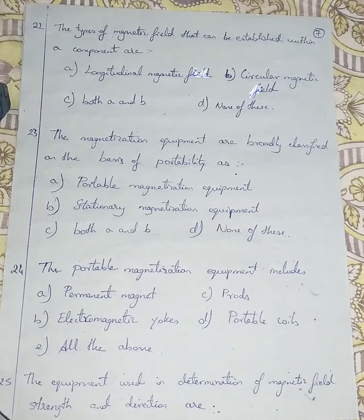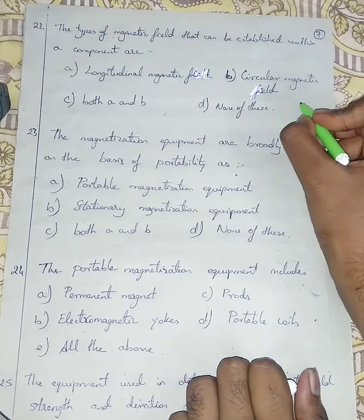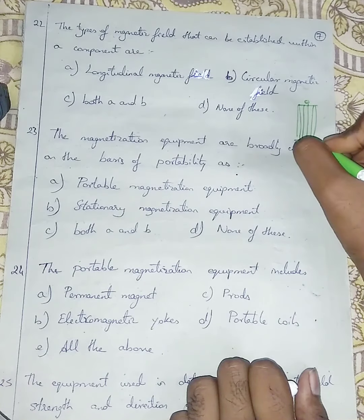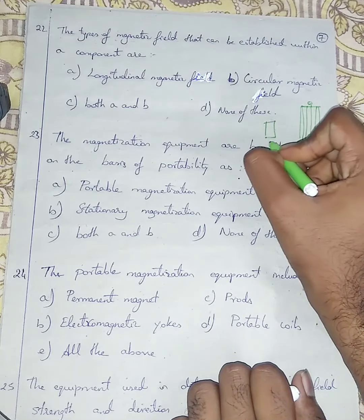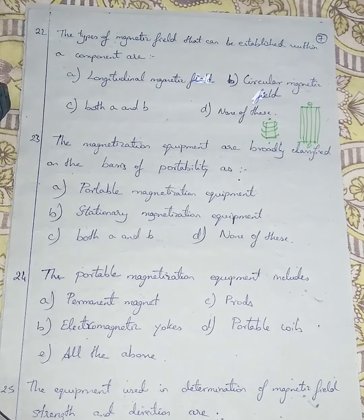Question number 22: The types of magnetic field that can be established within a component are: Option A - longitudinal magnetic field, Option B - circular magnetic field, Option C - both A and B, Option D - none of these. When applying an electric current, the magnetic field can be of two types: it can go in a straight line from top to bottom - longitudinal - or it can pass in a circular way. So I am going with Option C - both A and B.